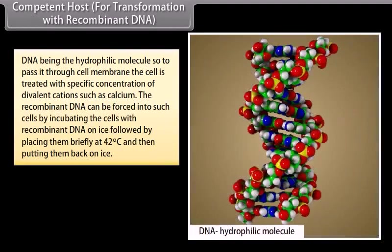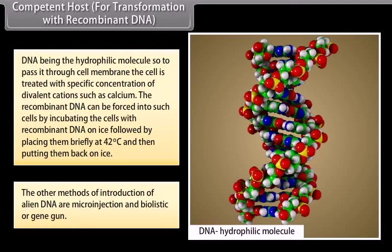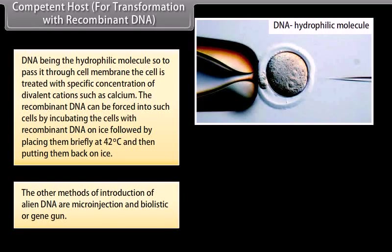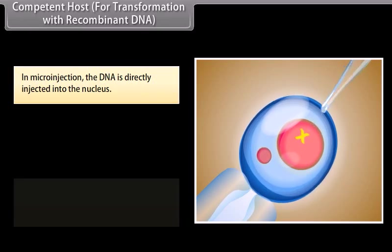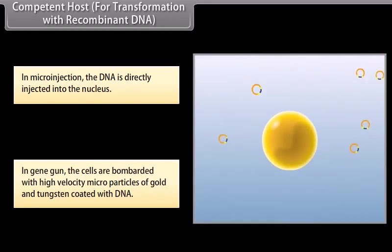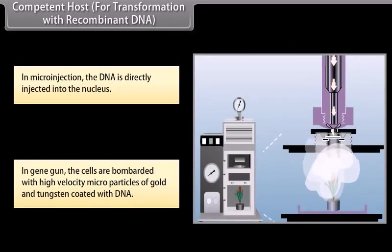Competent host for transformation with recombinant DNA: DNA being a hydrophilic molecule, to pass it through cell membrane, the cell is treated with specific concentration of divalent cations such as calcium. The recombinant DNA can be forced into such cells by incubating the cells with recombinant DNA on ice, followed by placing them briefly at 42°C and then putting them back on ice. Other methods of introducing alien DNA include micro-injection and biolistics (gene gun). In micro-injection, the DNA is directly injected into the nucleus, and in the gene gun, cells are bombarded with high-velocity microparticles of gold and tungsten coated with DNA.